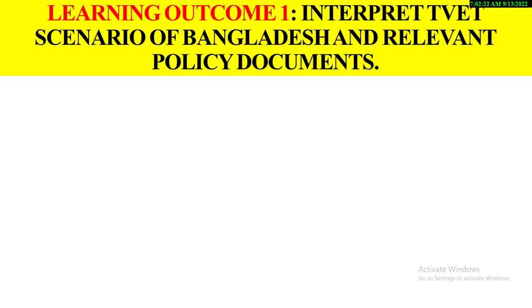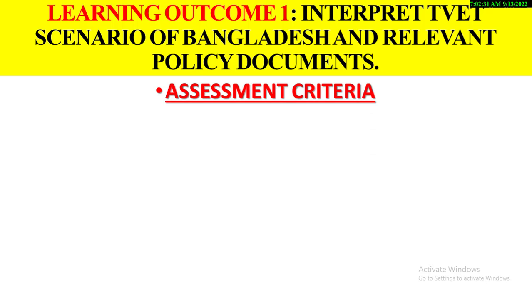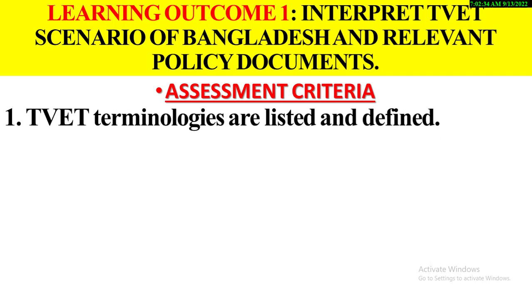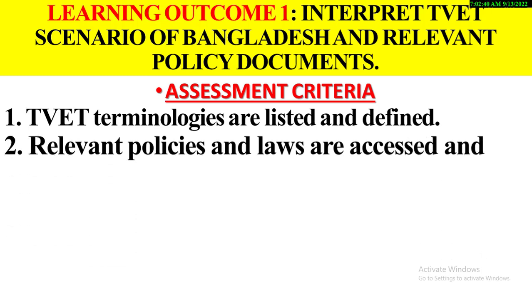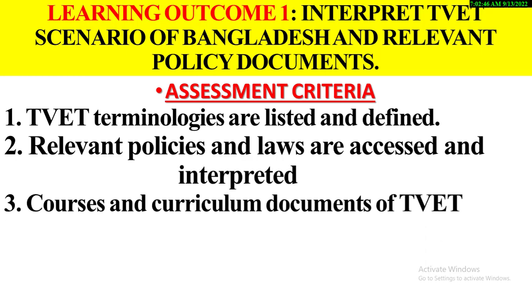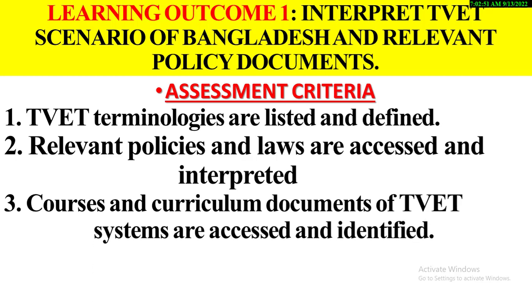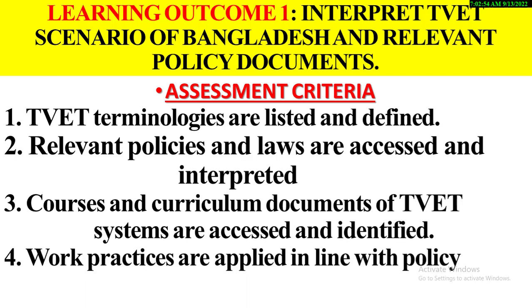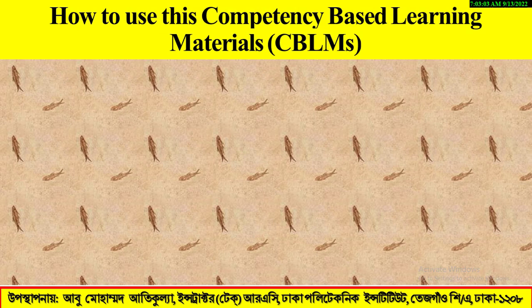Learning outcome one: Interpret TVET scenario of Bangladesh and relevant policies and documents. Assessment criteria: TVET terminologies are listed and defined. Relevant policies and laws are accessed and interpreted. Course and curriculum documents of the TVET system are accessed and identified. Work practices are applied in line with the policy framework.